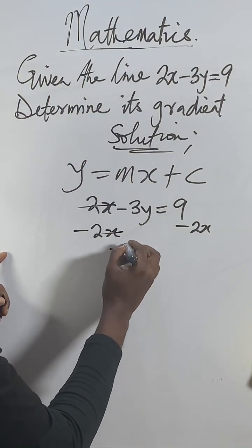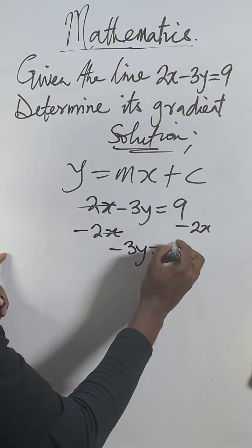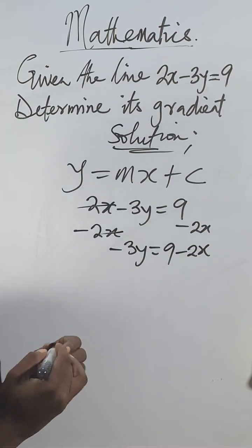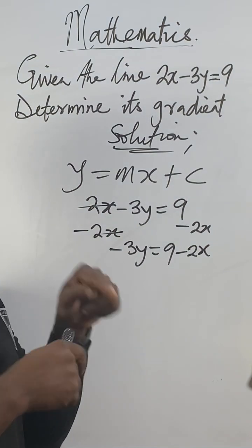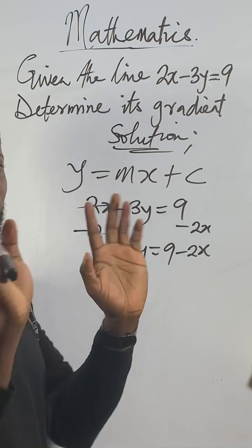What will remain now is -3y = 9 - 2x. You can't cross the sides, you can't change, so this is what we do.